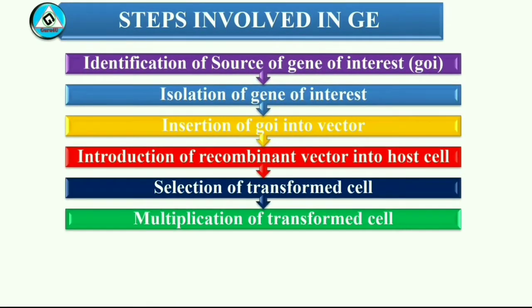The steps are: Identification of source of gene of interest, Isolation of gene of interest, Insertion of gene of interest into vector, Introduction of recombinant vector into host cell, Selection of transformed cell, and Multiplication of transformed cell.